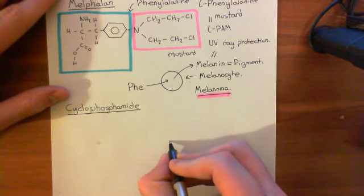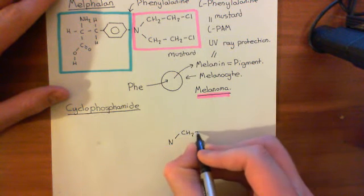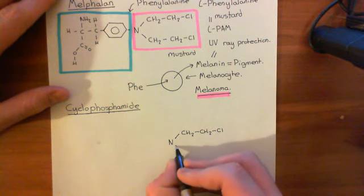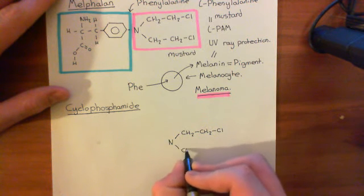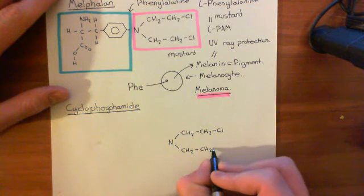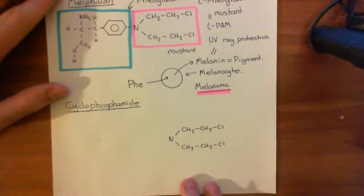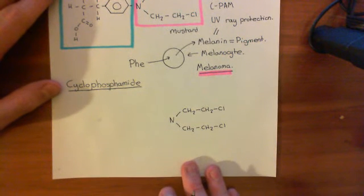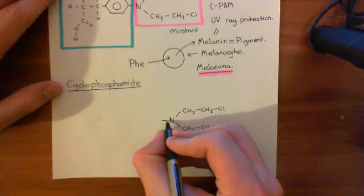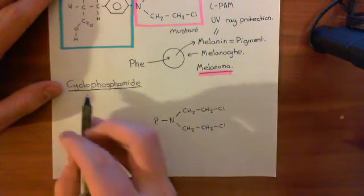So again you have this nitrogen here with these two chloroethyl groups coming off it. Here is one chloroethyl group, here is the second. So we've got the two chloroethyl groups coming off the nitrogen. Now the question is, what is this other group that comes off the nitrogen? Well, in the case of cyclophosphamide, what you have is a phosphorus atom, as you might have guessed.